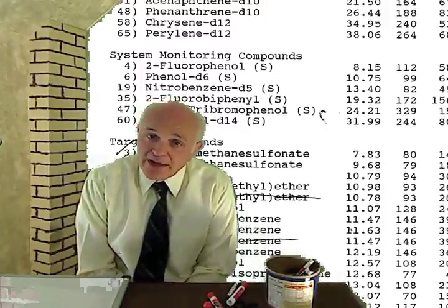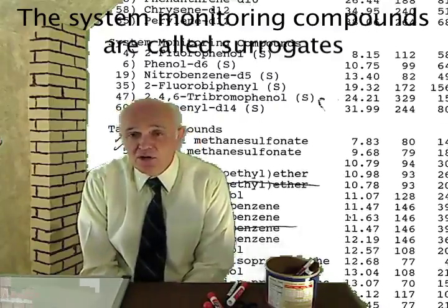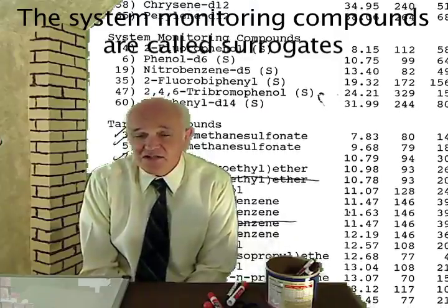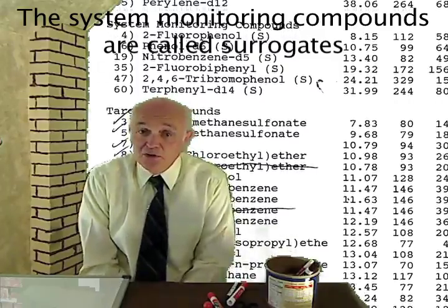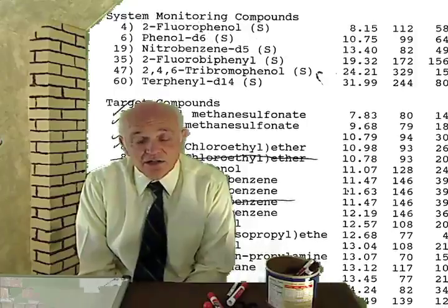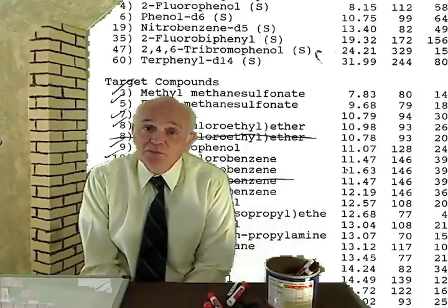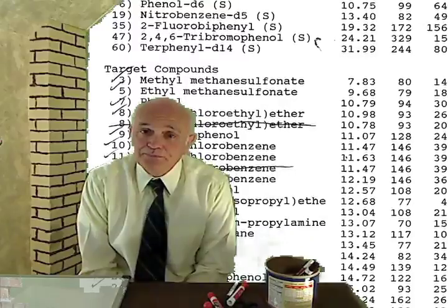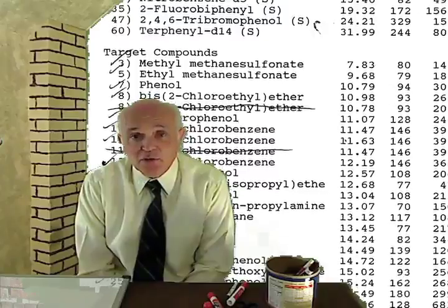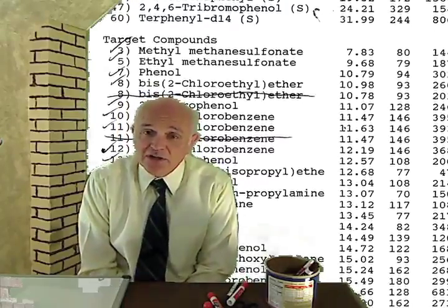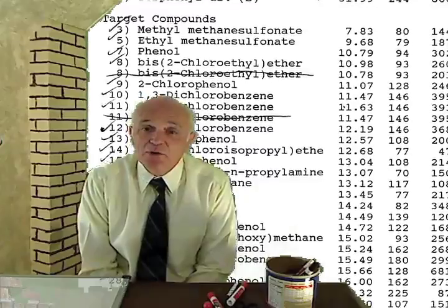If your prep blank comes out clean, there's no 100% certainty, but you can be very, very sure that the 2-methyl naphthalene came from the sample. That's the first quality control step, and that applies to everything in analytical chemistry — everything has a zero blank.